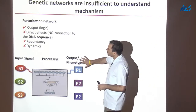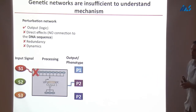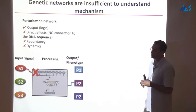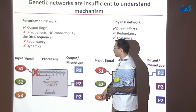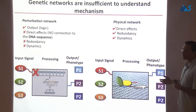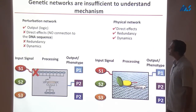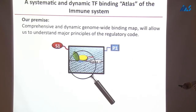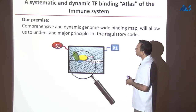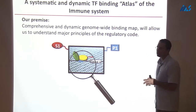Using a perturbation or genetic network, we can learn a lot about how changing one component changes the output — we can change from one output to another. But what we don't learn from this is the redundancy, which these networks have a lot of, with multiple transcription factors regulating each gene. Nor do we learn the dynamics of the system, which is very transient. A physical network showing where each of these different components binds on the genome would allow us to see which effects are direct or indirect, how redundancy is organized, and the dynamics. The goal is a comprehensive and dynamic genome-wide map of all transcription factors, showing how and where they bind.